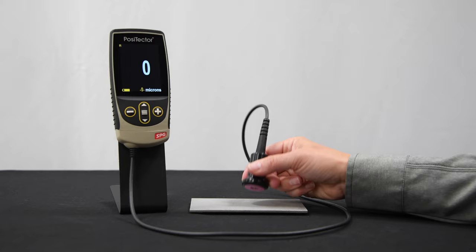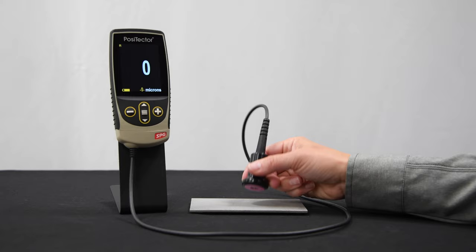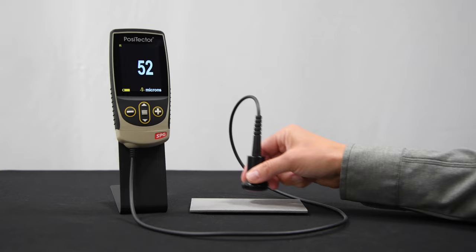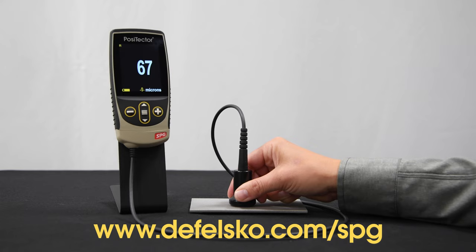Depth micrometers such as the PosiTector SPG have no per-test cost and are a quick, reliable way of determining surface profile. Learn about all of the features and benefits of measuring surface profile with the PosiTector SPG at defelsko.com/SPG.